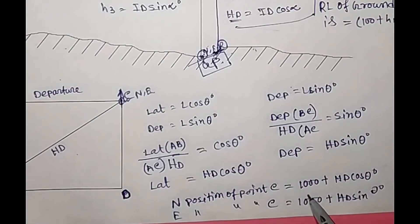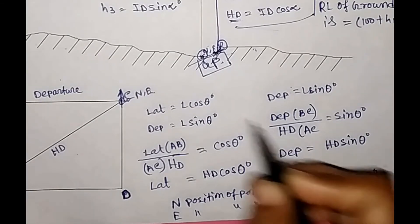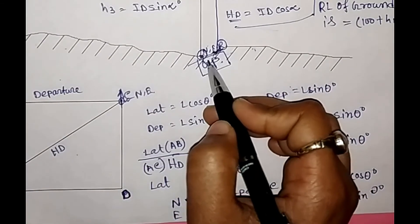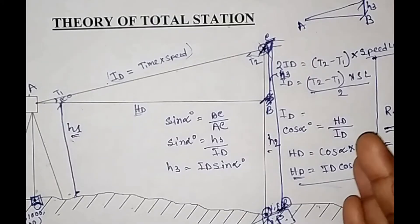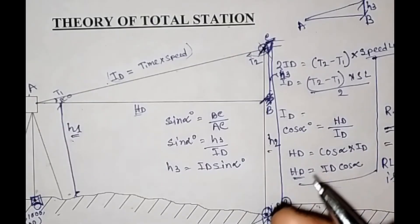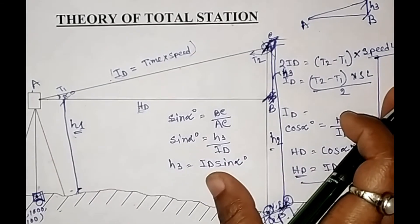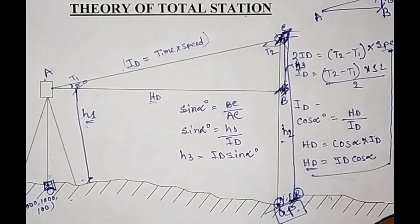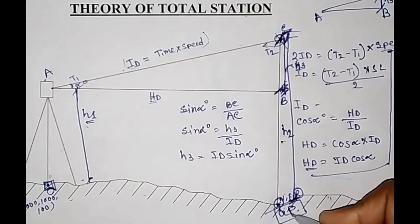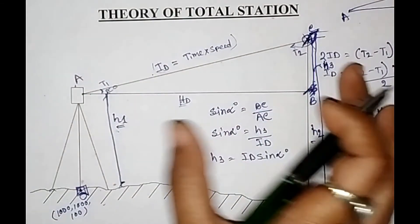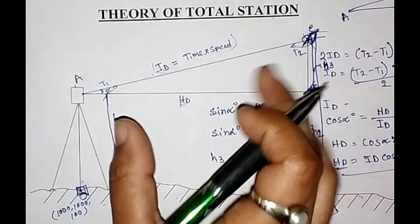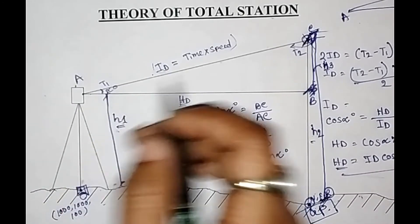The total station also calculates the elevation value of the unknown point. This elevation value is calculated with the help of inclined distance and vertical angle. When we level the total station, it already calculates the tilting done at the time of bisecting the target.